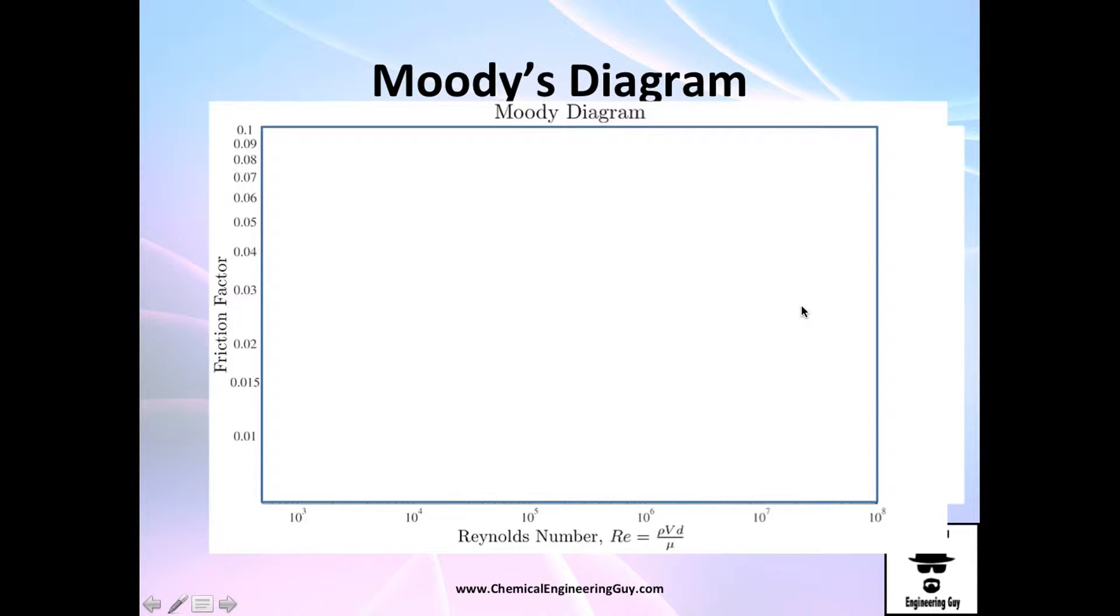What do we have here? Well, the first line is the model of the laminar flow. Right here is 2000, so anything before that is laminar flow. Recall that laminar flow is exactly 64 divided by Reynolds number, so it will be something like this.